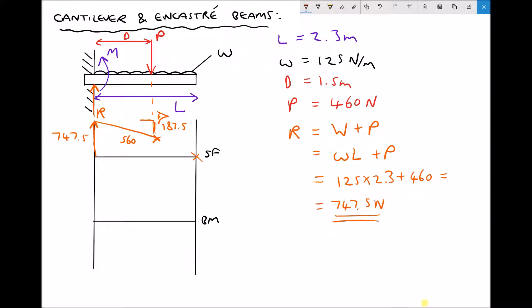Next, the point load of 460 newtons causes negative shear, so we drop another 460, bringing the shear force to 100 newtons. Then, moving from the point load to the end of the beam, we have 0.8 metres of UDL remaining: 125 times 0.8 equals 100 newtons. So the diagram continues dropping at an angle until it reaches zero at the free end, as expected.